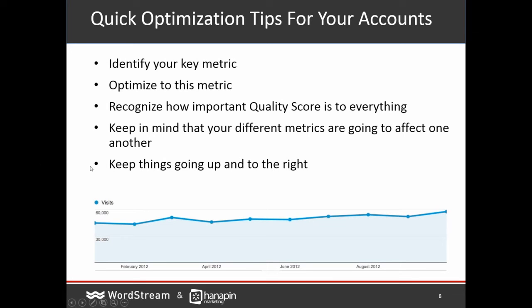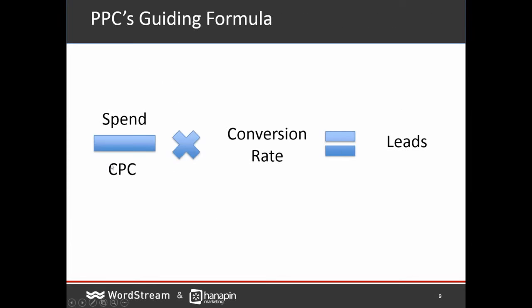As long as everything's going up and to the right — that's a phrase we use — keep things ticking along, make things a little better every week. The guiding formula of PPC we like to talk about in our office is: spend over CPC times conversion rate equals leads. We're really looking at CPC and conversion rate because these are the two we can work on. For CPC, we can improve click-through rates and change bids. For conversion rate, we can look at our landing page and write better ad copy.